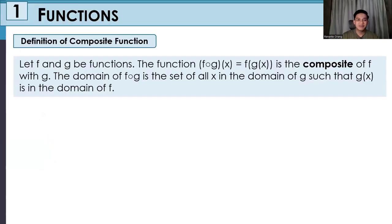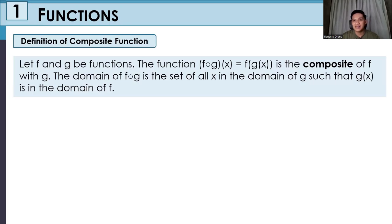Let us define the composite function. Let f and g be functions. The function f∘g, written as f of g of x, is the composite of f with g. The domain of f∘g is the set of all x in the domain of g such that g of x is in the domain of f.